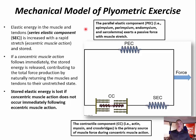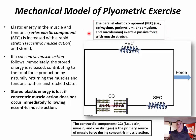As discussed back in module one, it's the contractile component of skeletal muscle — that is actin, myosin, and cross bridges — that is the primary source of muscle force production during a concentric muscle action. The parallel elastic component, consisting of layers of connective tissue including the epimysium, perimysium, endomysium, and sarcolemma, exerts a passive force with unstimulated muscle stretch.